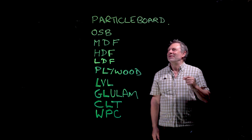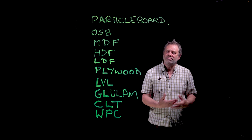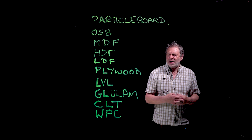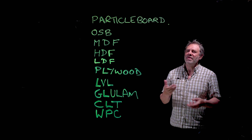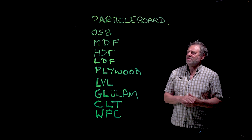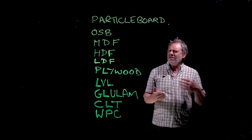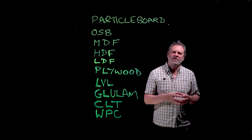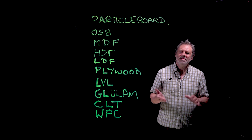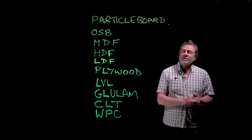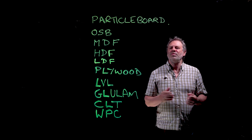Starting with particle board: it's made from chips, essentially wood chips, which you produce in a wood chipper, although you can produce them using hammer milling and similar methods. The chips are a fair size - visible to the naked eye. It's generally a low-end product, normally laminated with something to make it look nicer. Inside this laminate you'll often find kitchen units made of this sort of stuff.